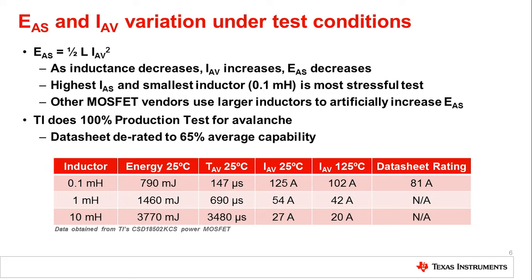We take this value and derate it in order to provide a little bit of margin. So we take the 125 amps and derate it by 65% — and in all cases, 65% is the number we use — giving us the 81 amps you see on the datasheet. This 81 amps is also the current used to calculate the energy shown on the datasheet. Final test actually screens to 70% of the measured capability, rather than 65%, to provide a little more margin between the datasheet rating and what the part was actually tested to.